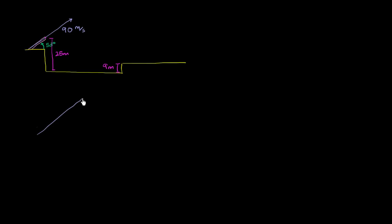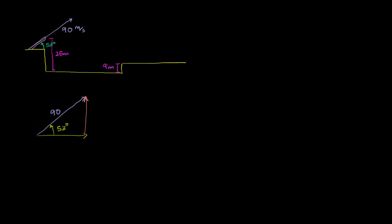If we draw our vector, the length here is going to be 90. The angle over here between the x-axis and our vector is 53 degrees. Let me draw the horizontal component — the horizontal component would look like this — and the vertical component would look like this. And so the vertical component of the vector — what would be the length of this side right over here?